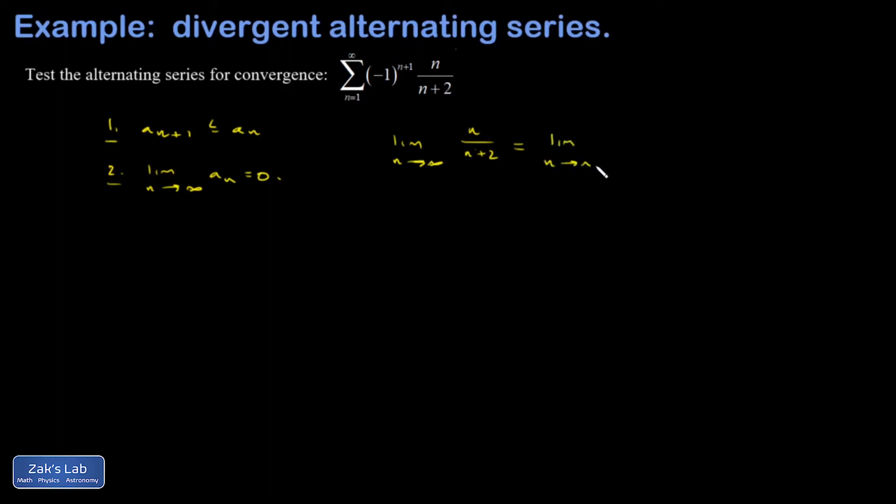If I want to be more formal about it, I would divide the top and bottom by the highest power of n appearing in the rational expression, and that gives me 1 over 1 plus 2 over n. And then I say that the 2 over n unambiguously goes to zero in the large n limit.